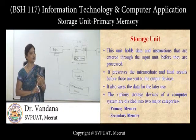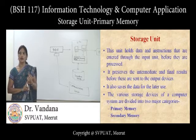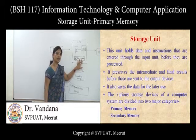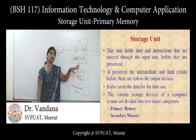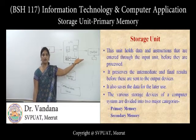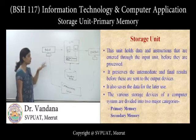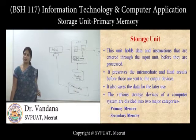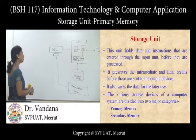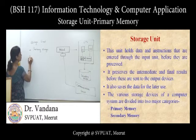Whatever program is entered, it is stored in primary memory. Intermediate results and final results after processing are also stored in primary memory before being handed over to the output unit. The data may be used later or stored in a secondary storage device. We can broadly classify storage devices into two major types: primary storage and secondary storage.